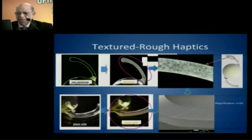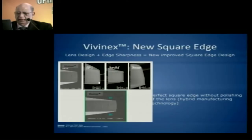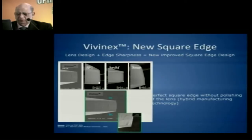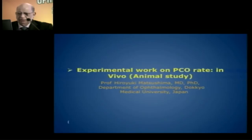PCO is also diminished by the edge sharpness of the lens design, which is a little different from earlier approaches. In earlier days, when we were worried about PCO we made edges sharp, but patients then experienced a ring reflection at the side. This has been eliminated by a blended edge design, which retains the advantages of sharpness and damming of PCO growth, without the reflection problems. The texturing of the optic edge also reduces dysphotopsia.